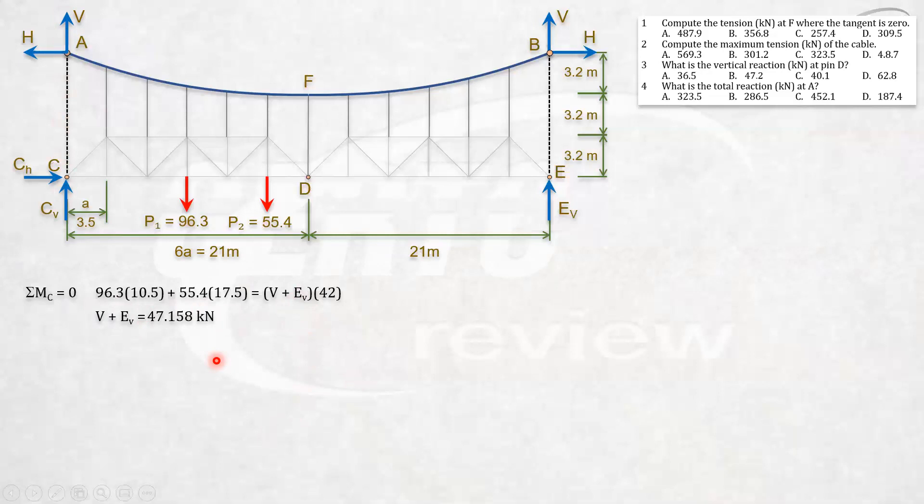I mentioned earlier that we have five unknowns here, so we still have four equations more to go. Let's see what we can do. Take note that pin D is a pin, so there's no moment here, and a cable has no moment. Let's cut a section through F, vertical section through F. Of course, by symmetry, it will pass through D. Let's look to the right of that section. We cut a cross section through F and D. What we see is only the right side. The forces that can be seen on the right side: we have the E vertical, the V, and the H. And of course, the tension here. Take note, I mentioned earlier that for cables, all the horizontal components at any point of the cable are all the same. So the horizontal component here is H, the horizontal component at F is also H. It is true for all cables.